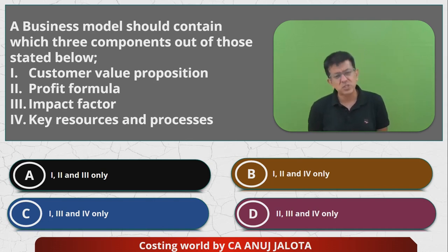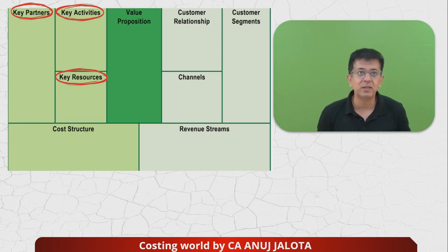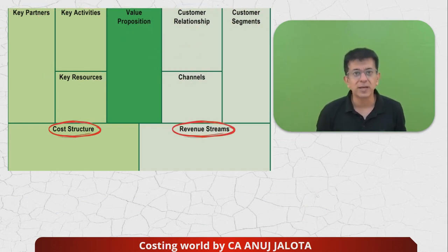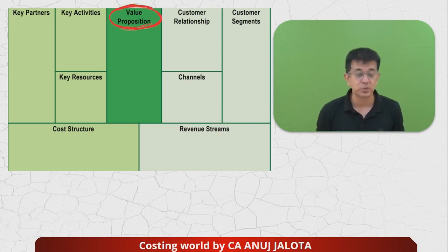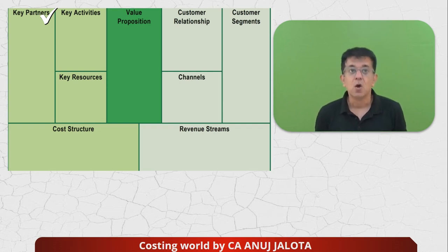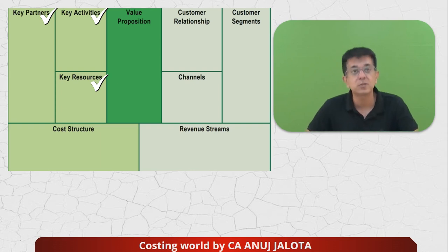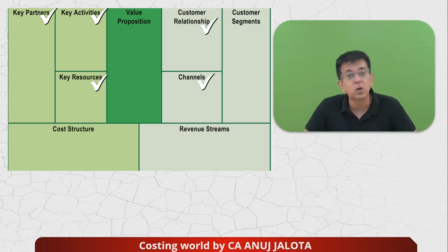Let's look at a normal business model canvas. On the left there are three components, on the right there are three, below there are two, and in the center is value proposition. The first is key partners — your suppliers or companies you're tying up with for marketing, etc. Then key activities — things like research and development or manufacturing. Key resources — what resources you require, like manpower or money.